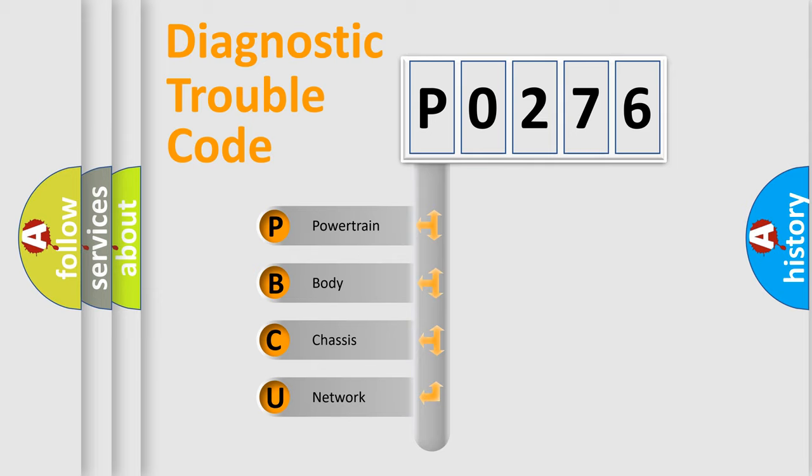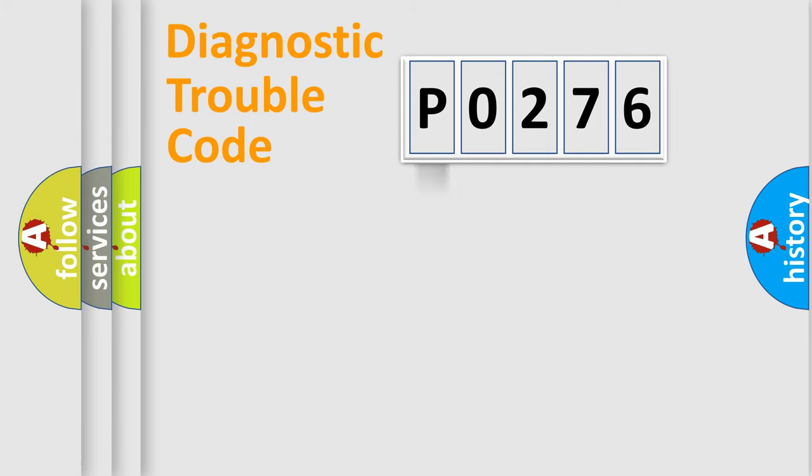We divide the electric system of the automobile into four basic units: Powertrain, Body, Chassis, and Network. This distribution is defined in the first character code.